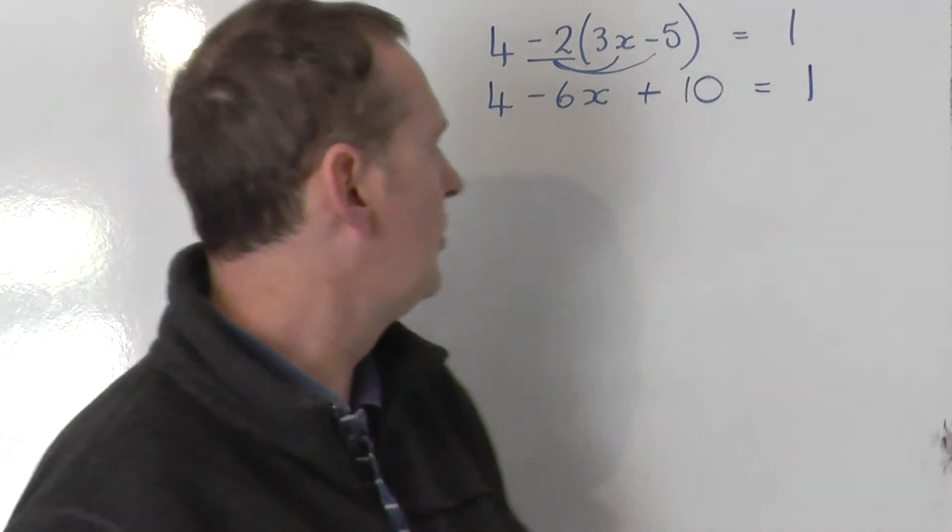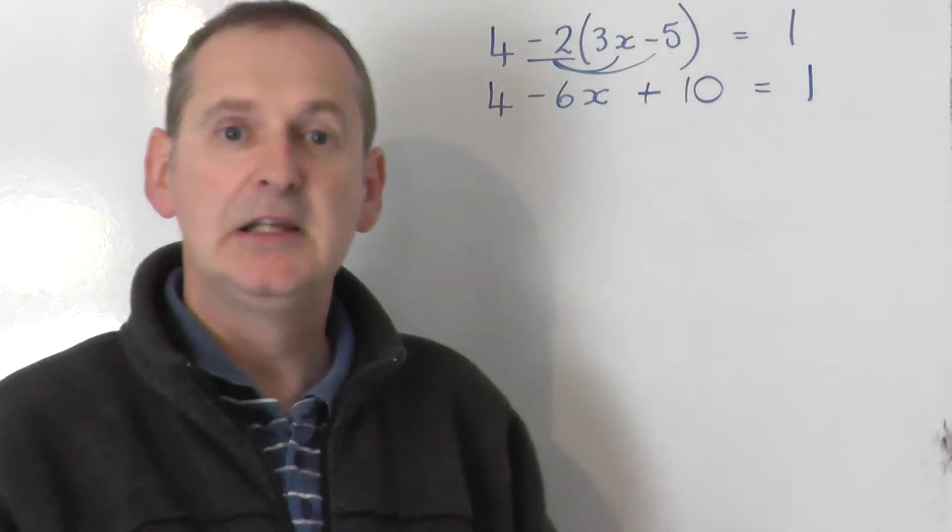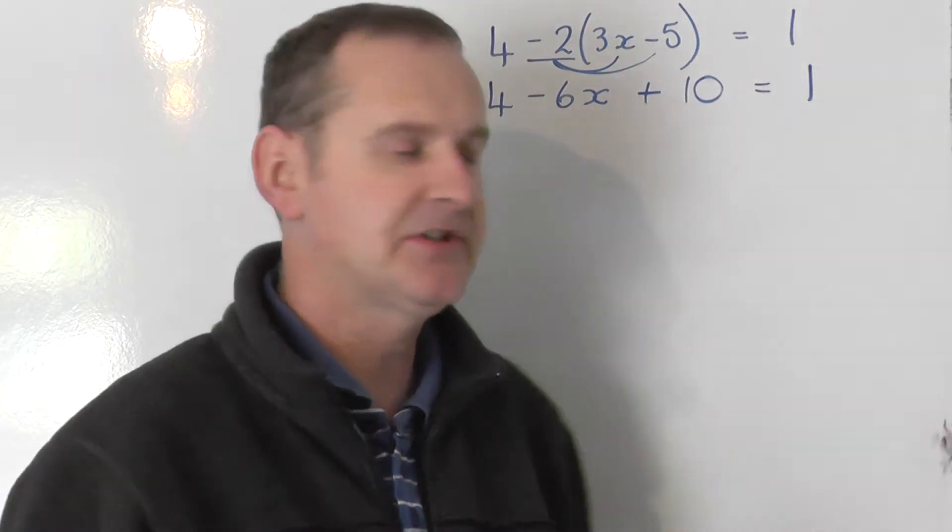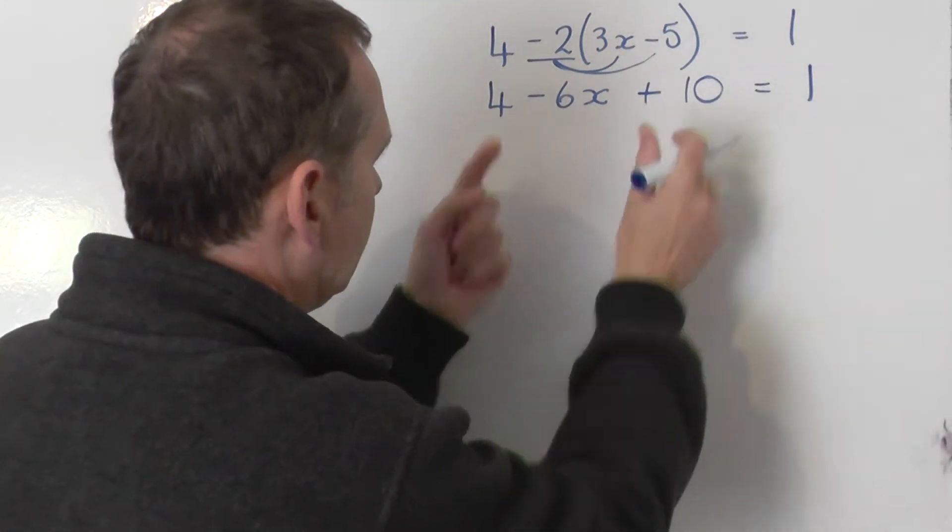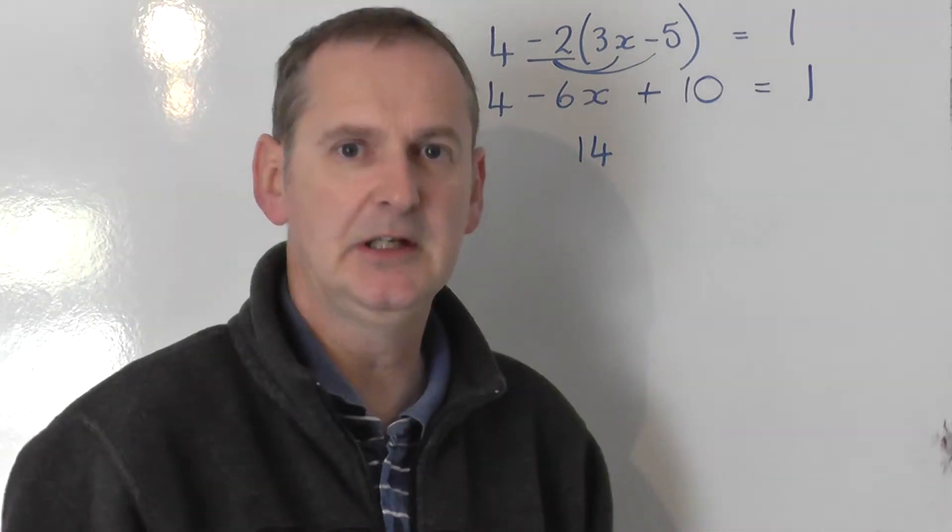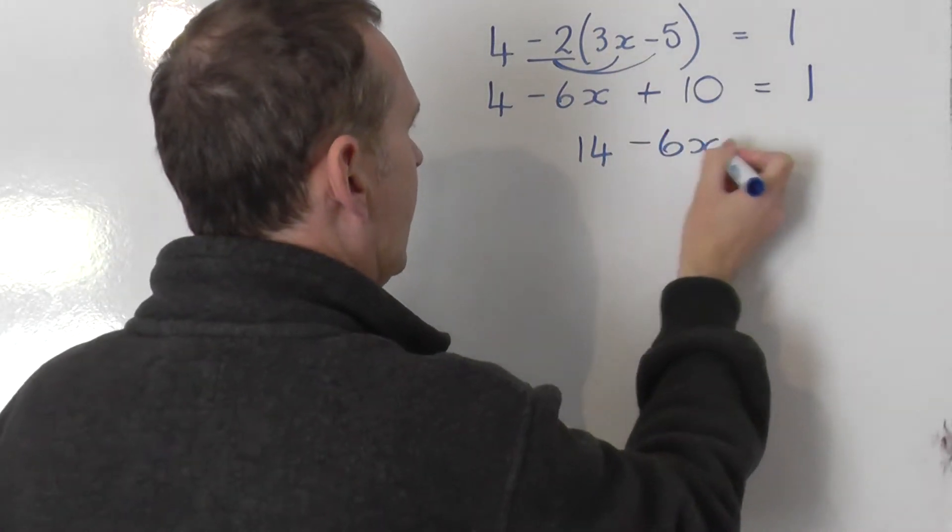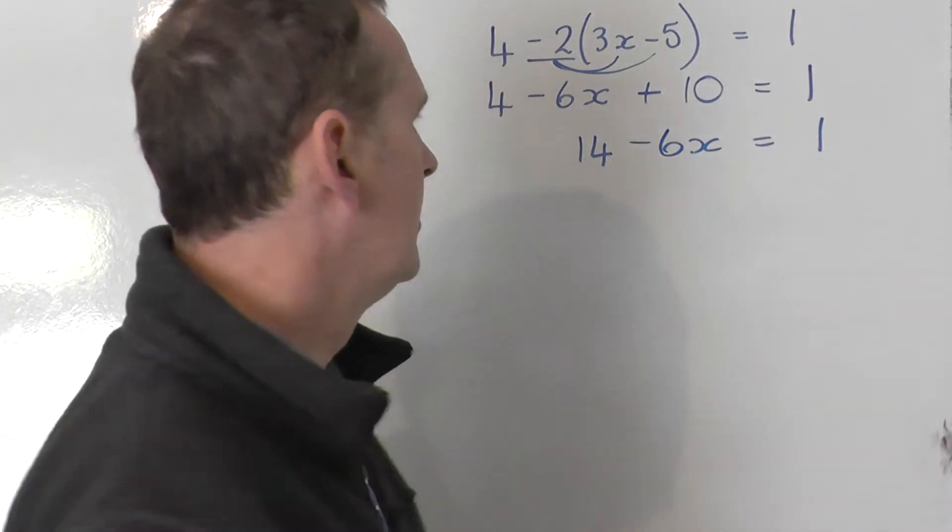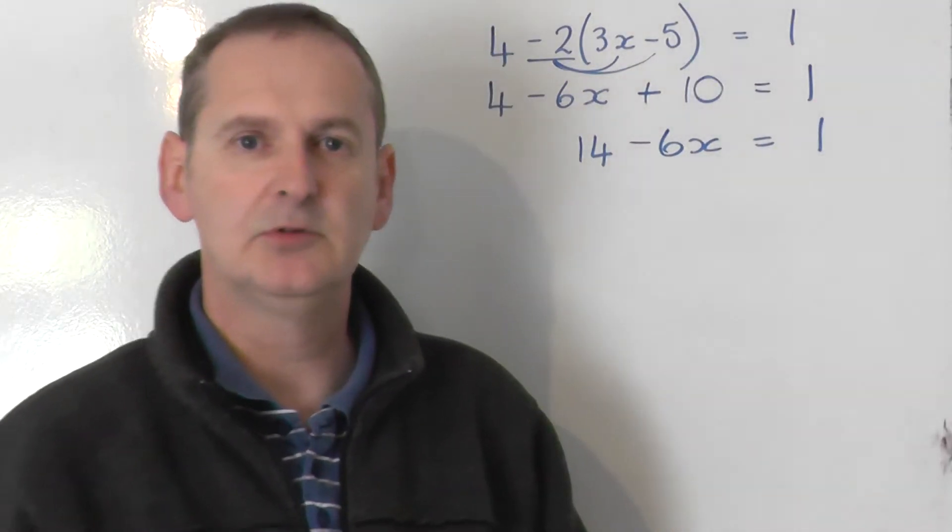So we've got 4 minus 6x plus 10 equals 1. Let's tidy up a little bit. On the left hand side we've got two numbers, the 4 and the 10, that can go together to give 14. 4 plus 10 is 14. I've still got the minus 6x and I've got equals 1. So we've got 14 minus 6x equals 1.